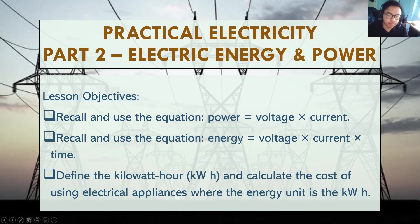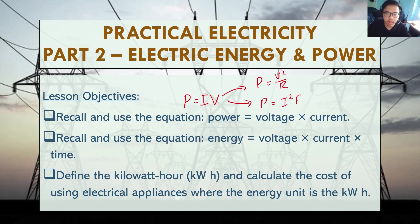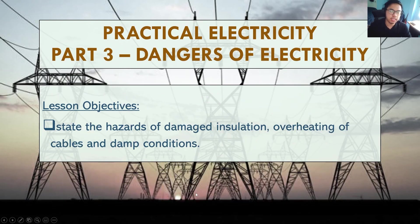To wrap up: electric power can be calculated using P equals IV, P equals V²/R, or P equals I²R. Electric energy is calculated using E equals VIT. We also learned about the kilowatt hour, a unit used to describe electrical energy in homes and buildings, and how to use it to calculate the cost of using electrical appliances. In the next video we'll look at part three: the dangers of electricity.